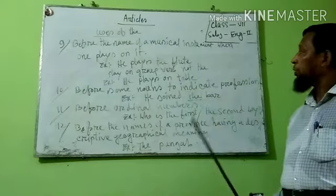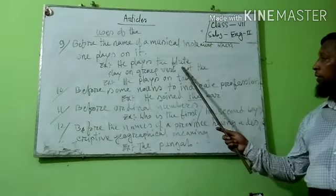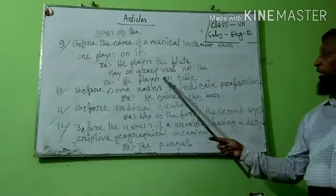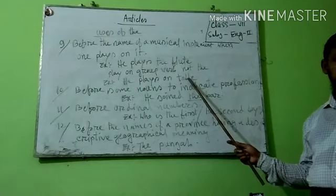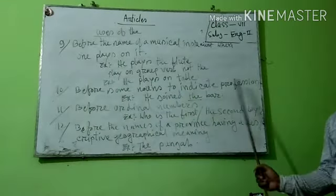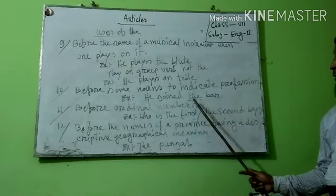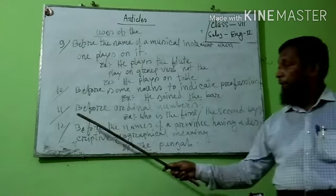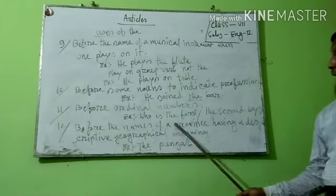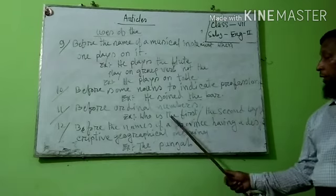Number nine: before the name of a musical instrument when played. Example: He plays the flute. But for tabla or bands, no article is used — he plays tabla, no article. Number ten: before some nouns to indicate perfection. Example: He joins the verb 'lawyer'.